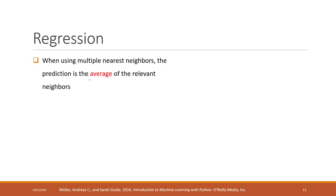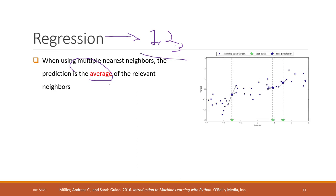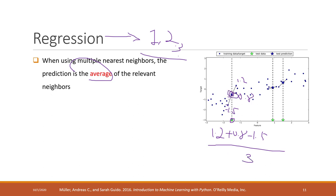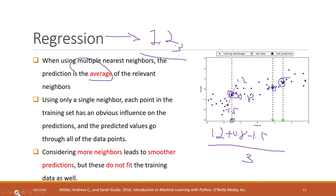For regression, we calculate the average of the neighbor values. Regression predicts exact numbers. For a given point, we average the values of its three neighbors to get the predicted result. For example, if the values are 1.2, 0.8, and -1.5, the average is (1.2 + 0.8 - 1.5) divided by 3. Similar patterns apply: with one neighbor, each point in training data has full influence, the training score is nearly 100%, but test accuracy is quite low.